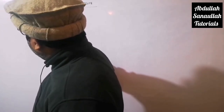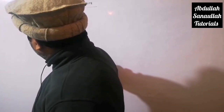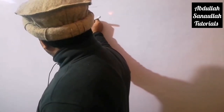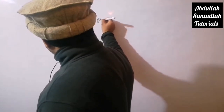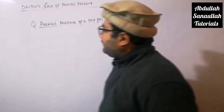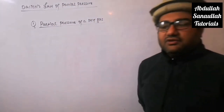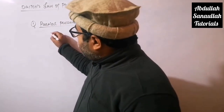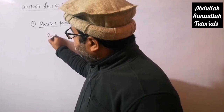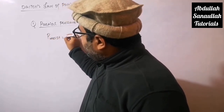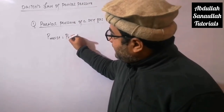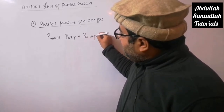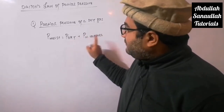We can find the partial pressure of a dry gas. There are so many gases that, when prepared in the lab, are collected over water. So any gas collected from the surface of the water will be a moist gas. The total pressure of that moist gas will be equal to the partial pressure of the dry gas plus the partial pressure of water vapors, because the moist gas is actually a mixture of the dry gas and water vapors.